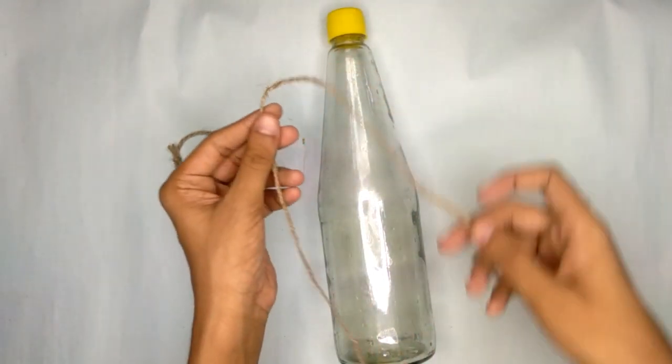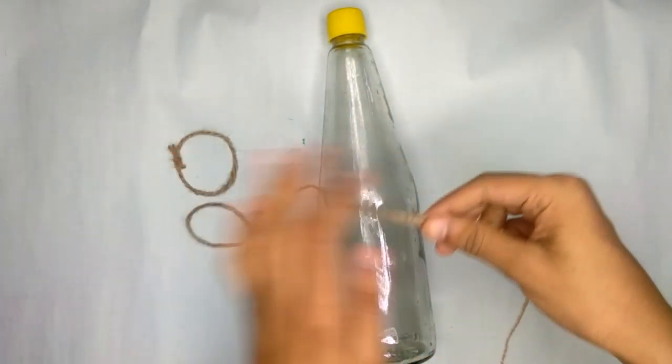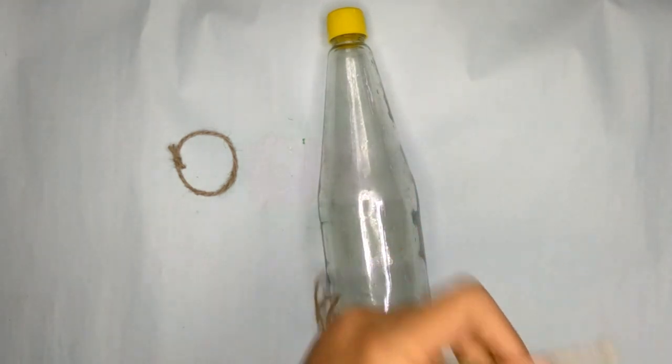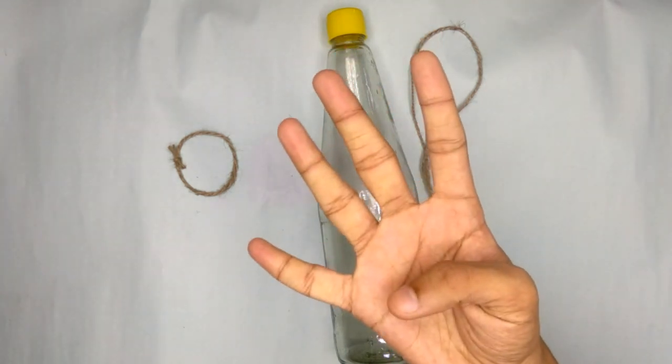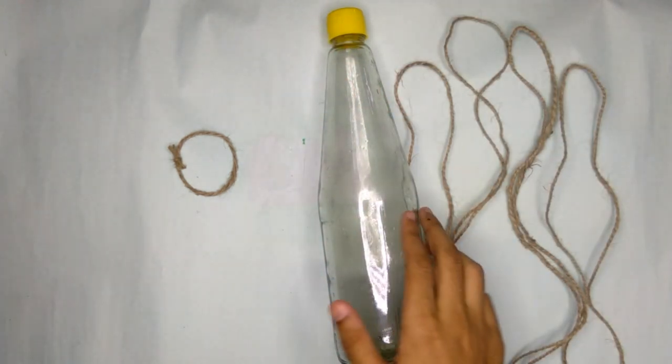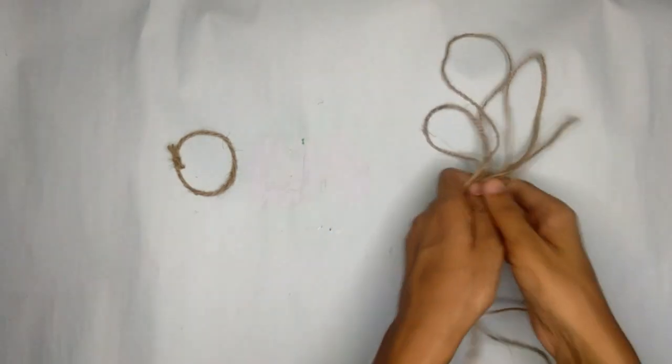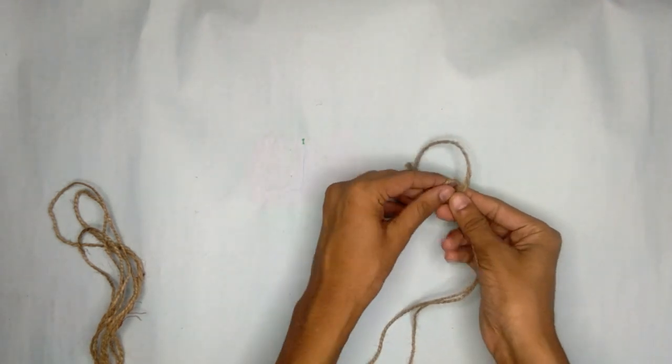Ensure that the thread we are taking is lengthy enough so that we can tie it at the last. This is one piece of thread. We will require a total of four. Now we will start tying them to the loop.